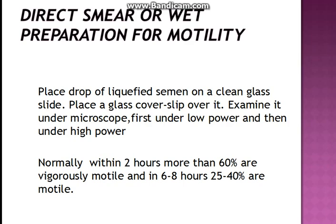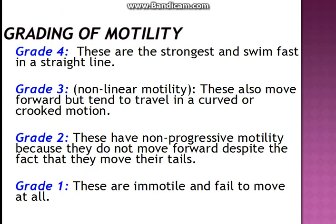Now going to the grading of motility — there are four grades. Grade 4 is the strongest: these sperms swim fast in a straight line. Grade 3 is a non-linear motility — they also move forward but they tend to travel in a curved or crooked motion.